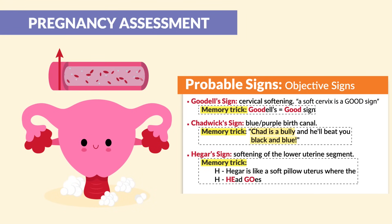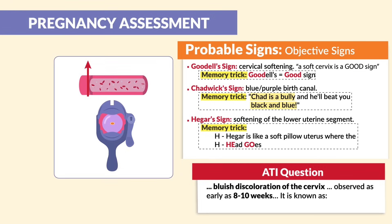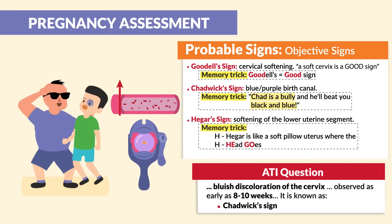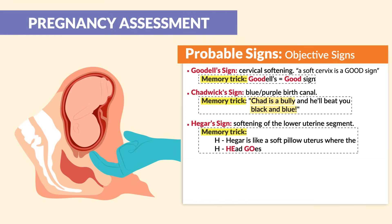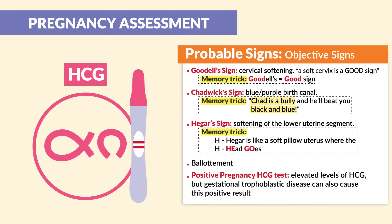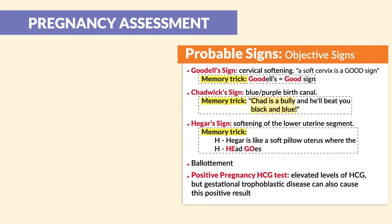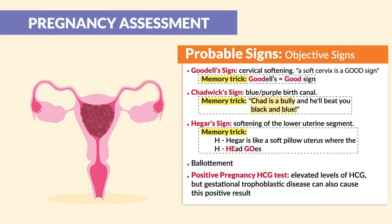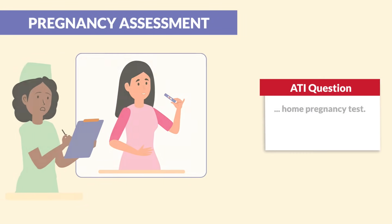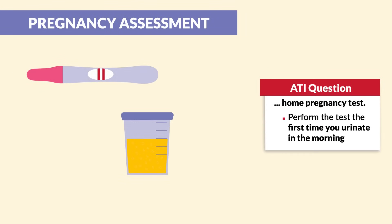Hegar sign is due to increased blood supply. ATI mentions a bluish discoloration of the cervix observed as early as 8 to 10 weeks — this is known as Chadwick sign, so yes, Chad makes you black and blue. A few other objective signs include ballottement, which we call fetus against the finger — a sharp upward push against the uterine wall with the finger inserted into the vagina, diagnosed by feeling the return impact of the displaced fetus. And lastly, a positive pregnancy HCG test reports elevated HCG levels, though gestational trophoblastic disease can also cause a positive result. The best time for the urine sample is in the morning when the client first gets out of bed.